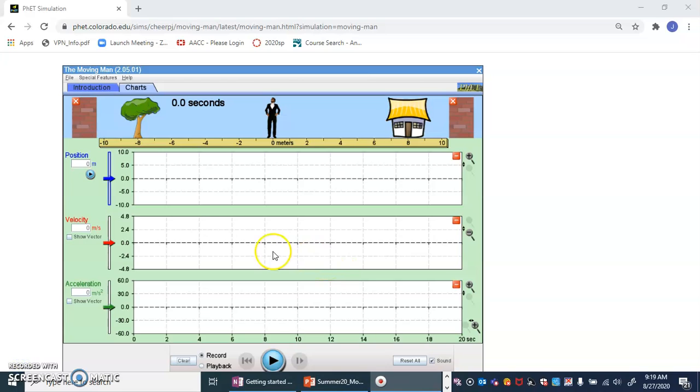All right, this is the moving man simulation, which is found on the PhET site, P-H-E-T of the University of Colorado. And so we have a little guy here, and we can say he's starting at zero meters. And we're going to give him a velocity of two meters per second and zero acceleration, which means he's going to have a constant velocity once I hit this play button. There we go.